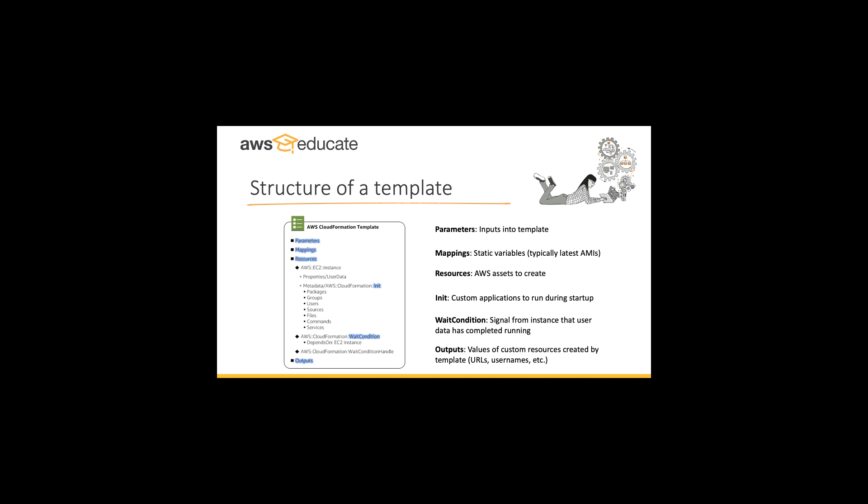Here's an example of the structure of a template. You've got parameters, which are the inputs to the template. You've got mapping — static variables, maybe the latest list of AMIs. Then resources — the assets you need to create, the init application. Sometimes you have applications that need to run a sysprep or some scripts as part of the infrastructure that fires up. You may also need to allow some wait time to ensure the instance doesn't go into full operation until it has loaded the software or run the startup scripts. And then there are output values of custom resources created by templates — URLs and usernames.